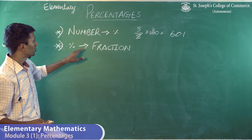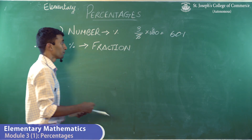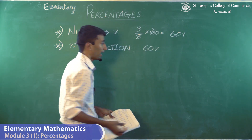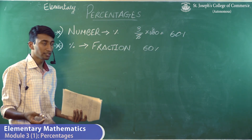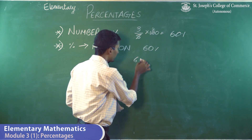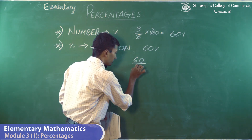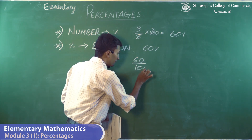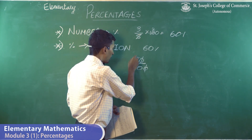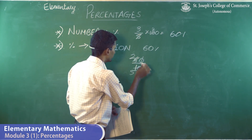Now, percentage to a fraction: if I want to convert a percentage to a fraction, I'll take the same example of 60% and divide it by 100. If I simplify it, I get 3/5.